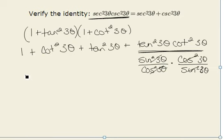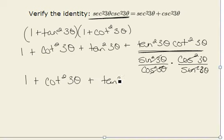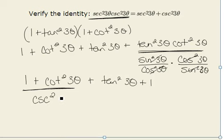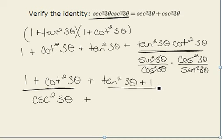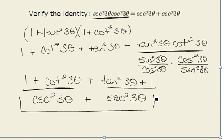Therefore, we have it simplified to 1 plus cotangent squared of 3 theta, plus tangent squared of 3 theta, plus 1. We recognize that the first two terms, 1 plus cotangent squared of 3 theta, can be rewritten using the Pythagorean identity as cosecant squared of 3 theta. Likewise, the last two terms, tangent squared of 3 theta plus 1, are equivalent to secant squared of 3 theta, therefore verifying our identity.